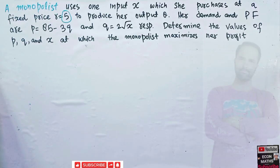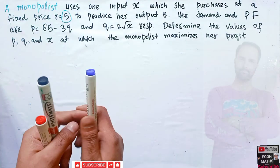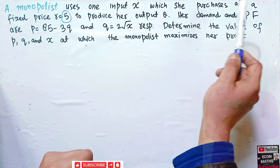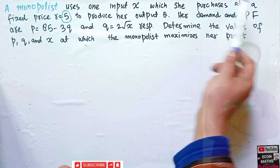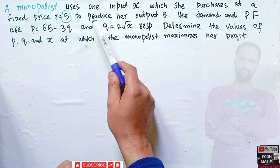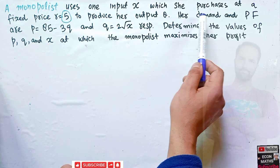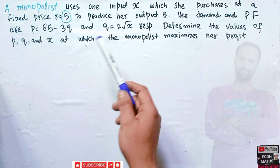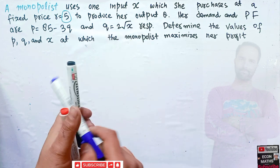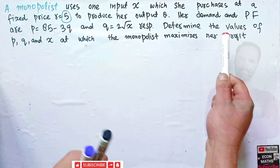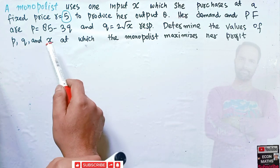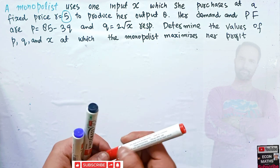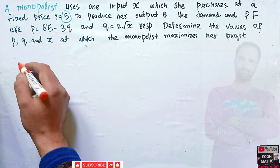In this video we will try to solve another question on profit maximization. The question is: a monopolist uses one input X which she purchases at a fixed price of R equal to 5 to produce her output Q. Her demand and production functions are P equal to 85 minus 3Q and Q equal to 2 under root X. We have to determine the value of price, quantity, and input at which the monopolist maximizes her profit.